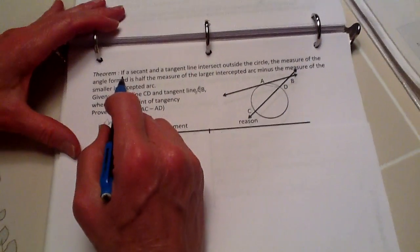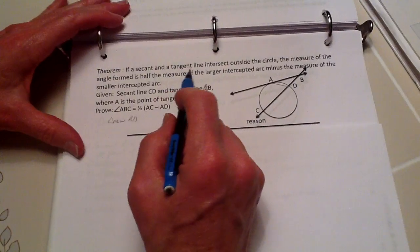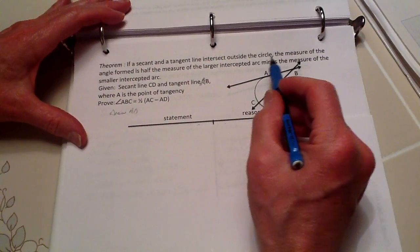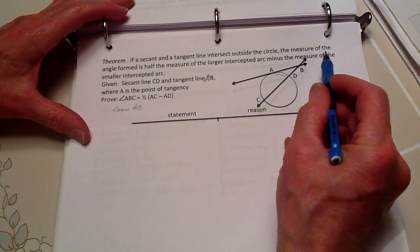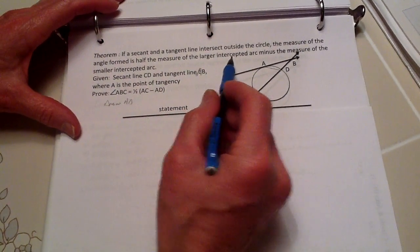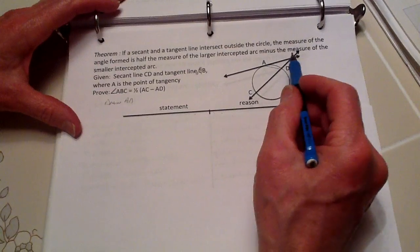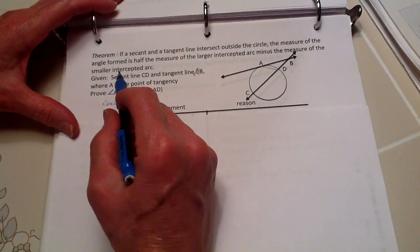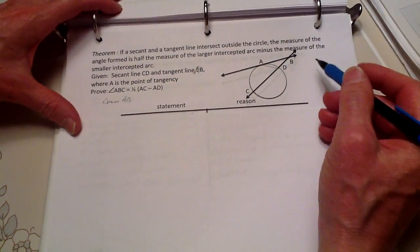Now, to prove: if a secant and a tangent line intersect outside the circle, then the measure of the angle formed is half the measure of the larger intercepted arc minus the measure of the smaller intercepted arc.